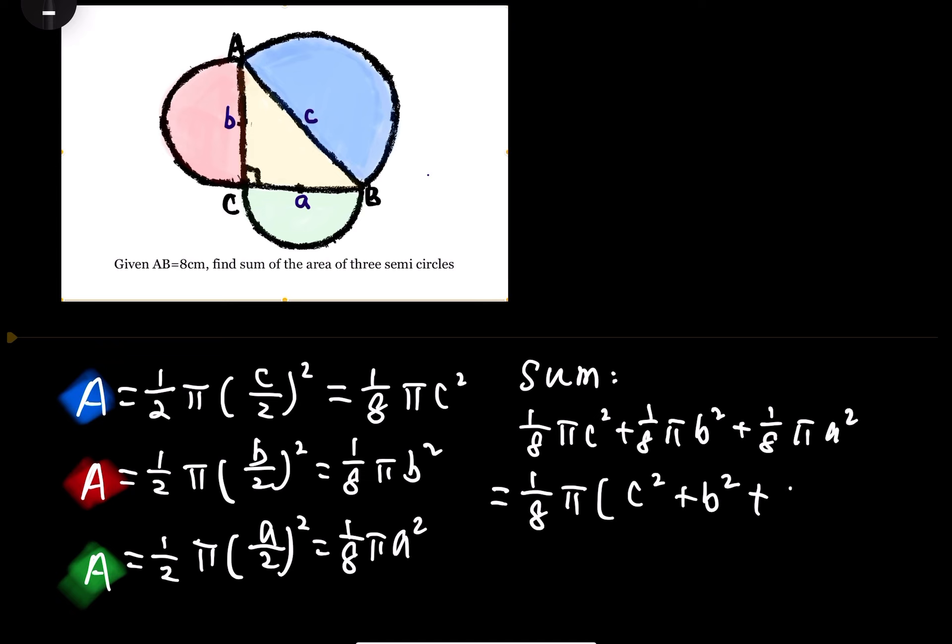Since we have a right angle triangle, we know the Pythagorean theorem: a squared plus b squared equals c squared. So I'm going to replace a squared plus b squared by c squared. We have c squared plus another c squared, which gives us 2c squared.